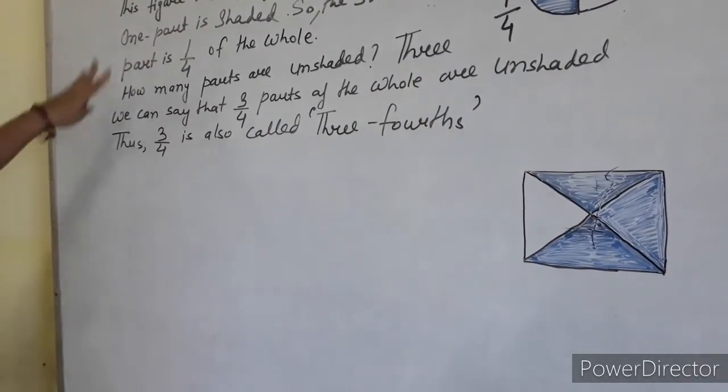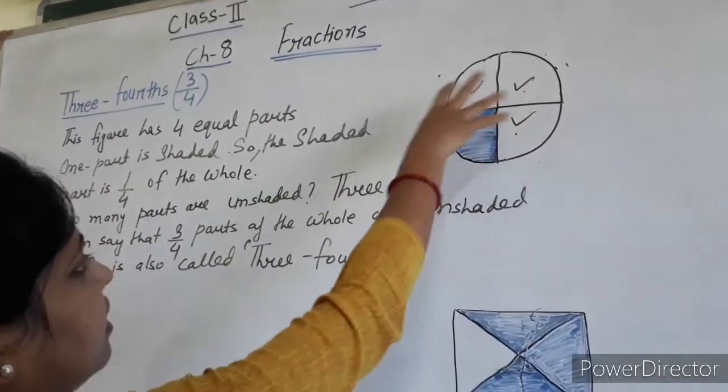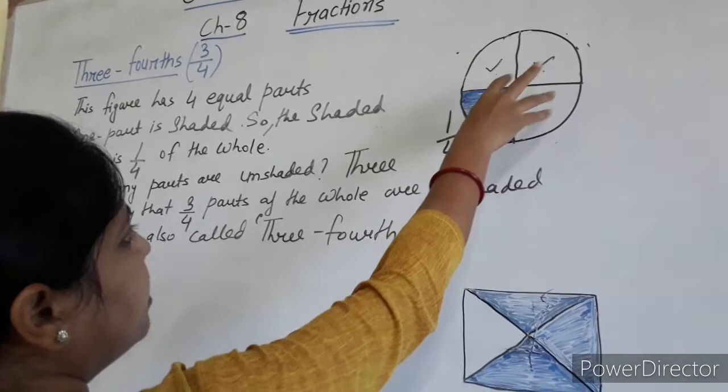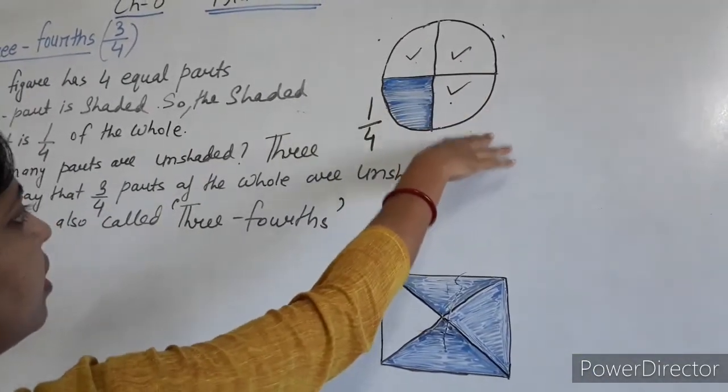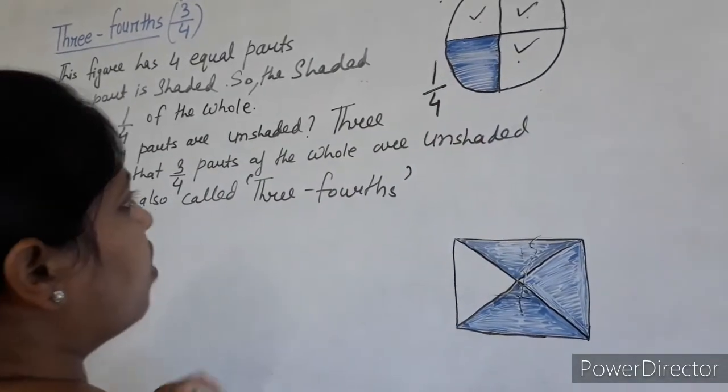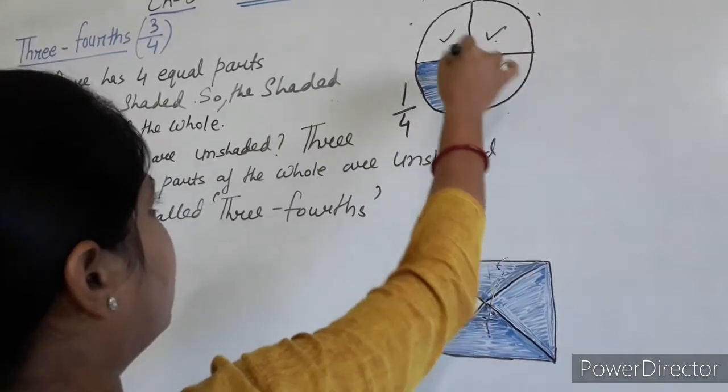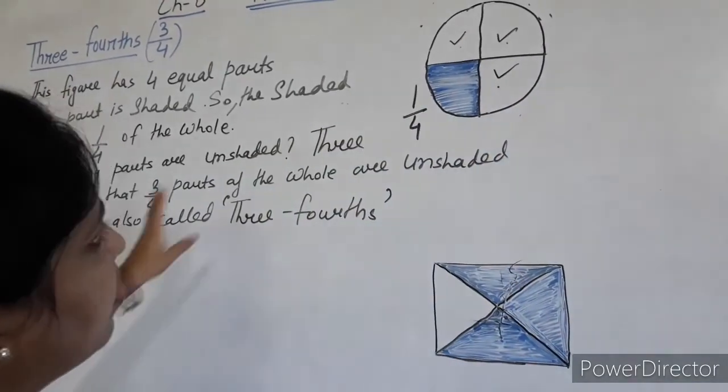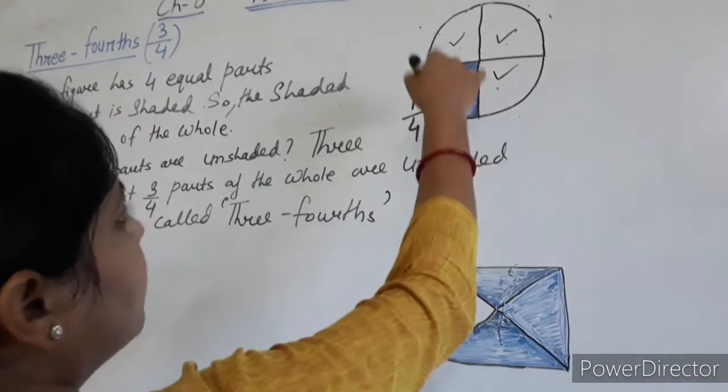So both of us understand, this is one circle I have taken and this circle is divided into 4 equal parts. Each part is 1 by 4th. Among them, one part is shaded and this one part is the 1 by 4th of the whole. Then how many parts are shaded? 3 parts are shaded and so we can write like this.